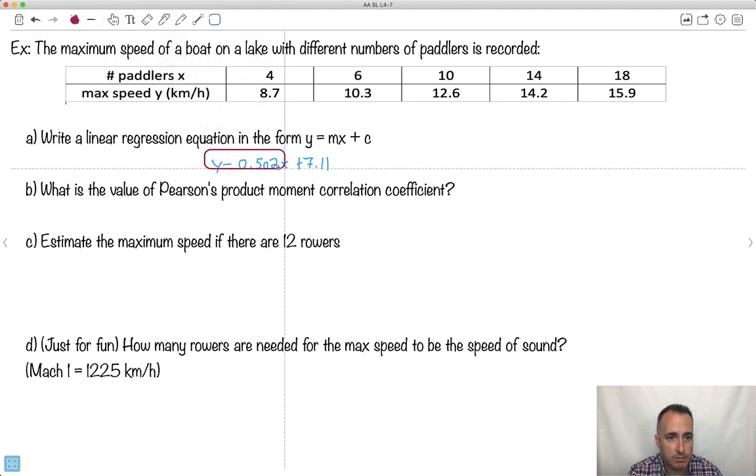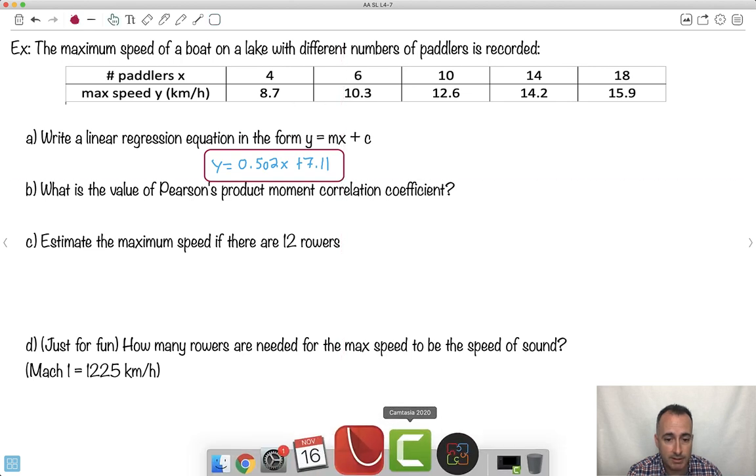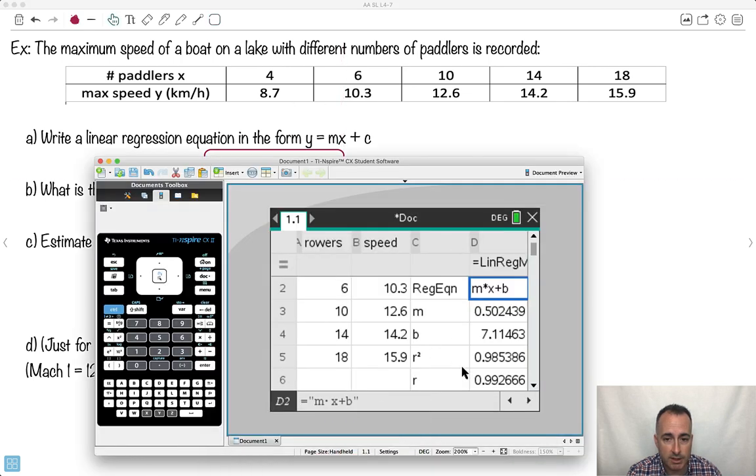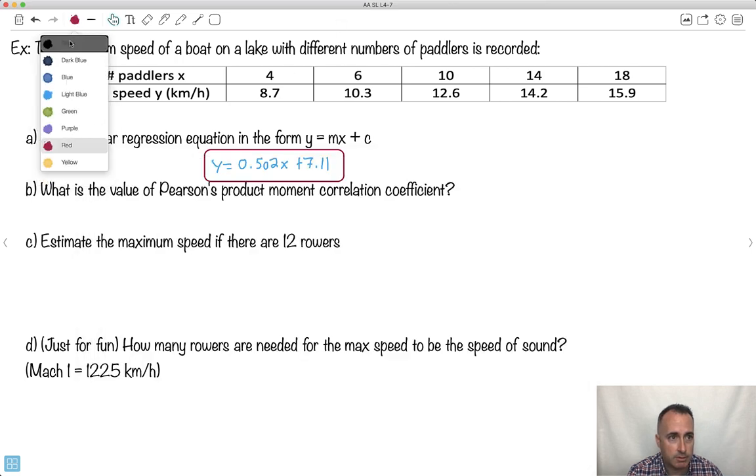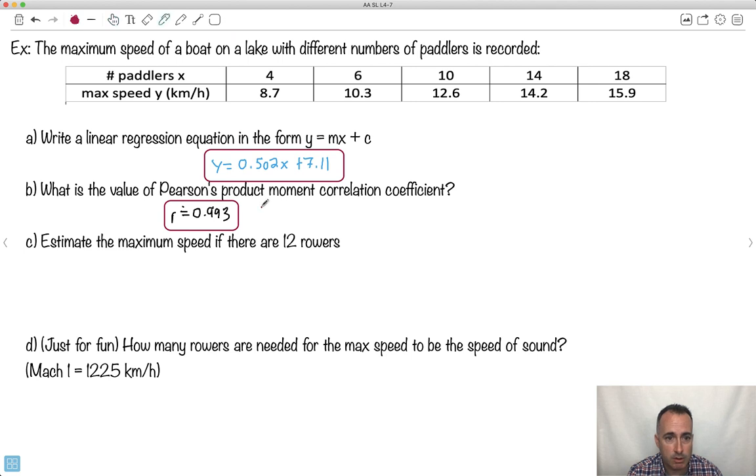So there is my regression equation. What's the R value? So is this a good fit? We can see by the R value it's 0.993. So the R value is approximately 0.993. So you tell me, is this a good fit? Darn right it is. It's almost 1. This is a strong positive correlation. That tells you that the more rowers you add, the faster you go.